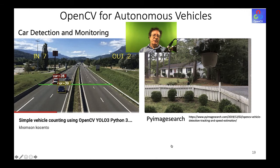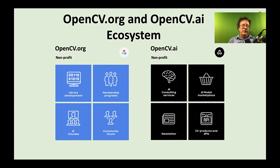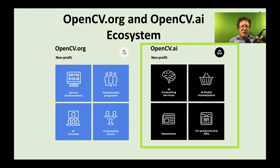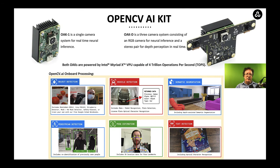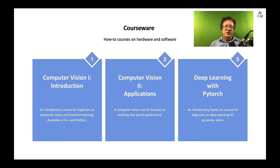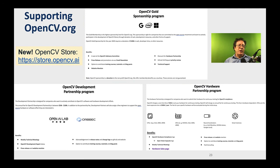Looking at the OpenCV ecosystem: we have a non-profit, opencv.org, with the library, memberships, and courses; and a for-profit side doing consulting, product partnering, blogs, and newsletters. We put out the OpenCV AI Kit — a smart camera that sees in depth and does deep learning and computer vision on-chip, going into mass production in December. Courseware includes intro to computer vision, applications including deep learning, and deep learning with PyTorch. We have gold sponsorships, development partnerships, and a hardware program for chips or cameras. We also have a new store just opening to sell these things.